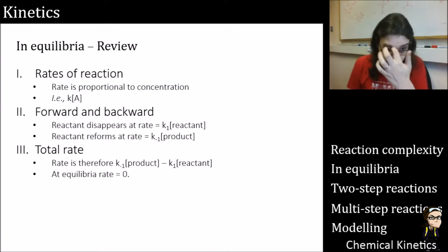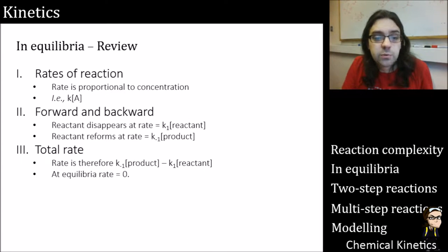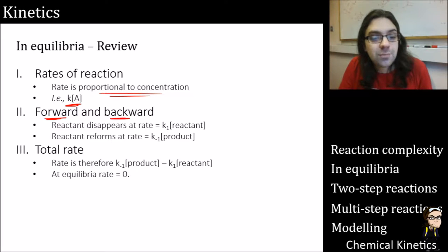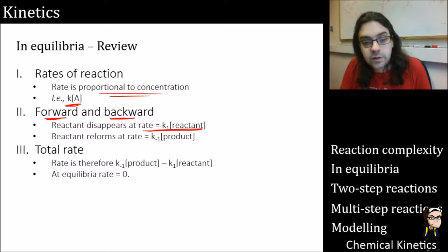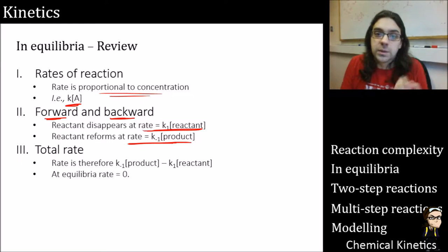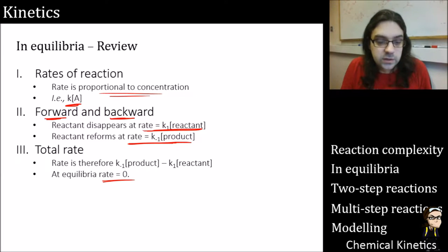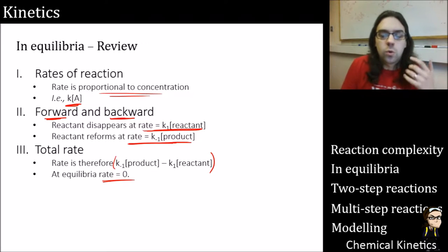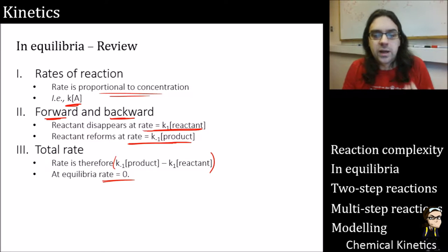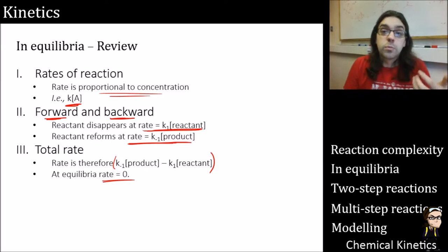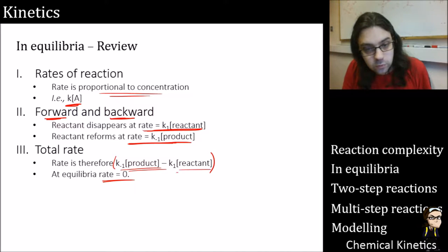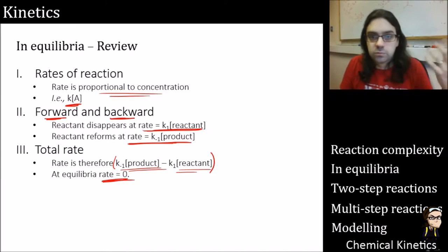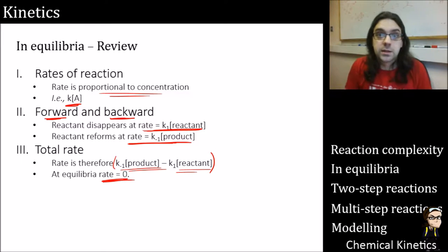To review: rates of reaction are proportional to concentration. In equilibrium, there are forward and backward reactions. The reaction disappears at one rate and reforms at another. At equilibrium, the overall rate of change is zero — we add all the processes that form something and all the processes that remove it. Setting that to zero and rearranging lets us extract thermodynamic information from kinetic data.